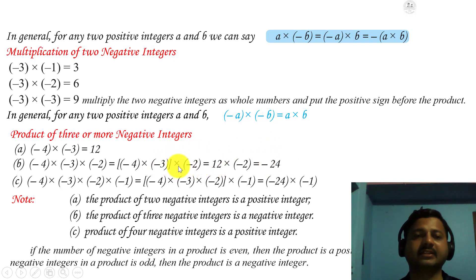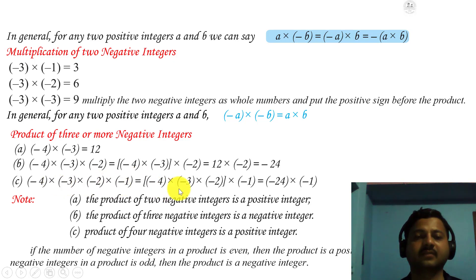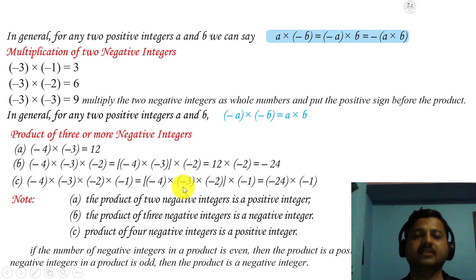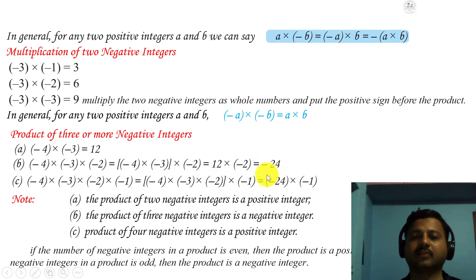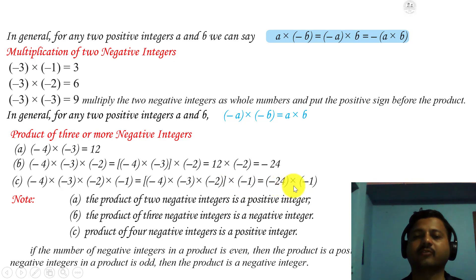That is for three negative integers. Now with four negative integers: minus 4 into minus 3 into minus 2 into minus 1. Minus into minus is plus, then plus into minus is minus: 4 threes are 12, 12 twos are 24, giving minus 24 so far. Then minus 24 into minus 1: minus into minus is plus, so 24 ones are 24. We get a positive number.